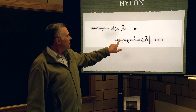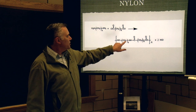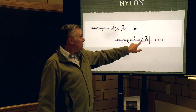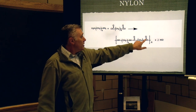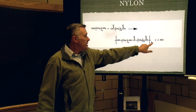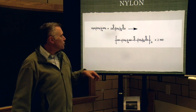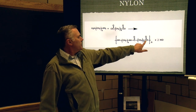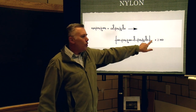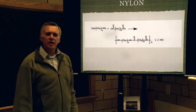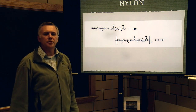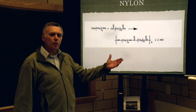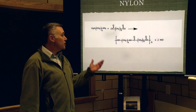Noticing the repeating unit: we have NH, then CH₂s, then NH, carbon double-bonded oxygen, then the eight CH₂s, and it just keeps repeating. N represents some fairly large number — oftentimes in the hundreds or thousands. So that's how we make nylon from these two reactants.